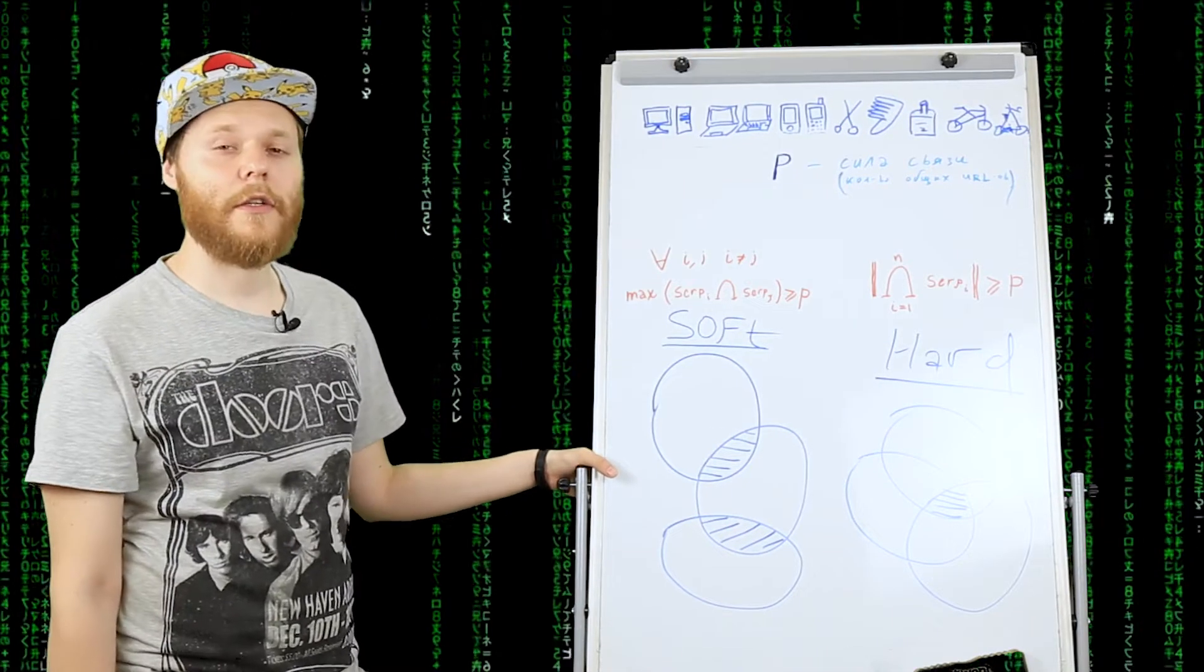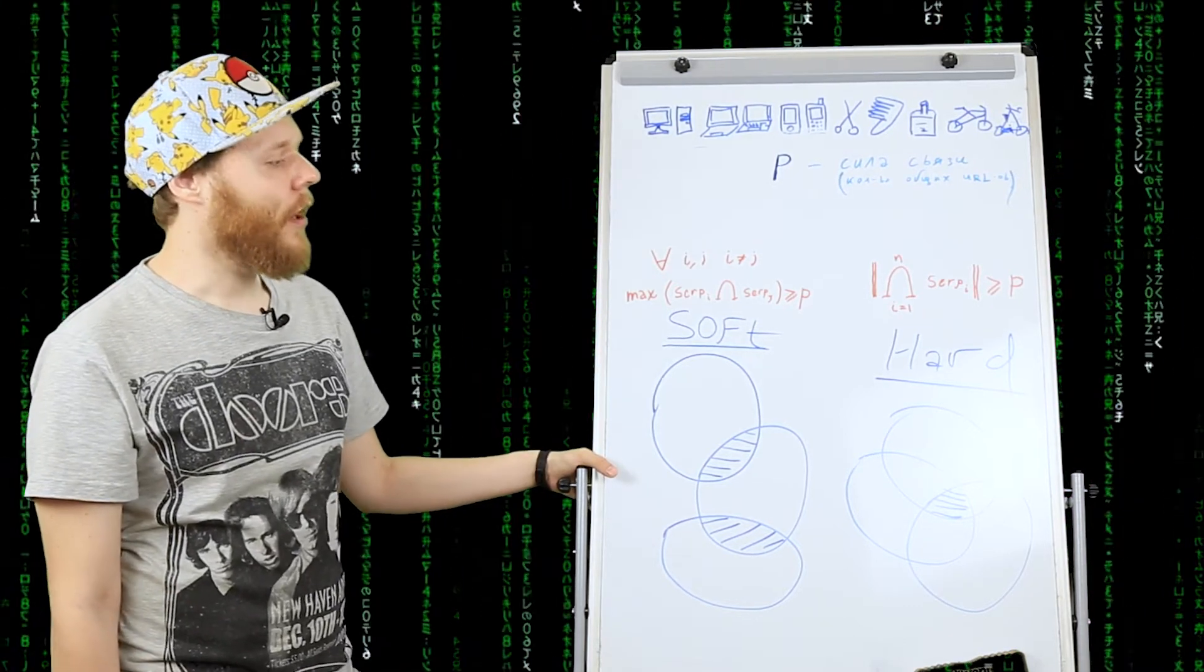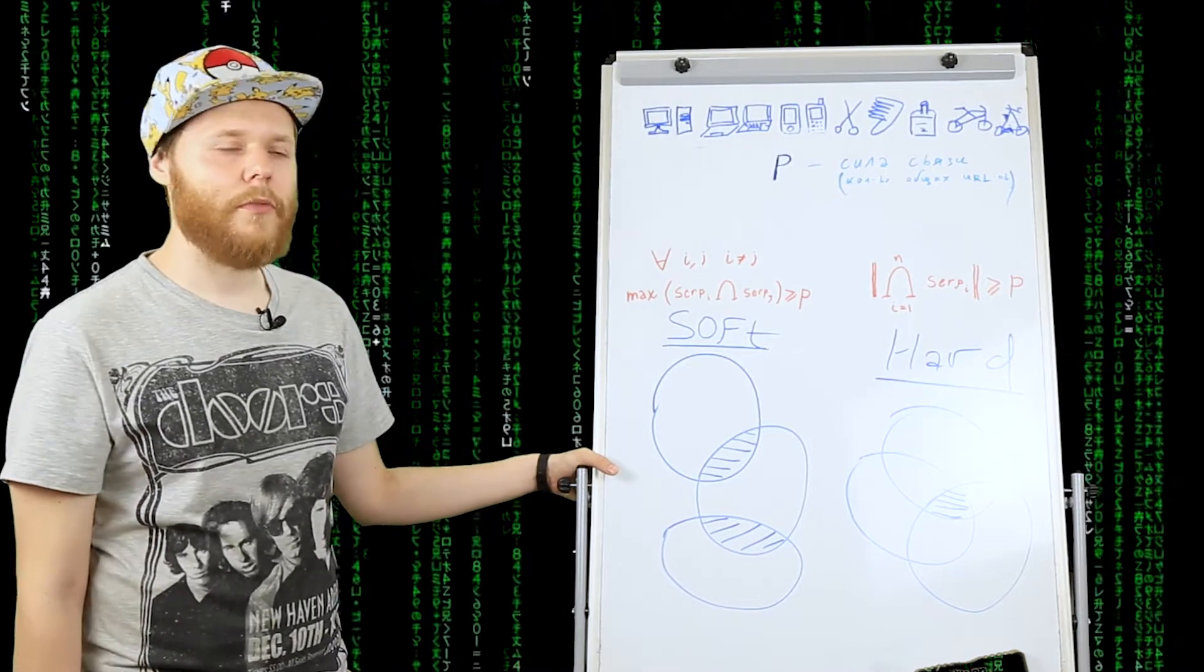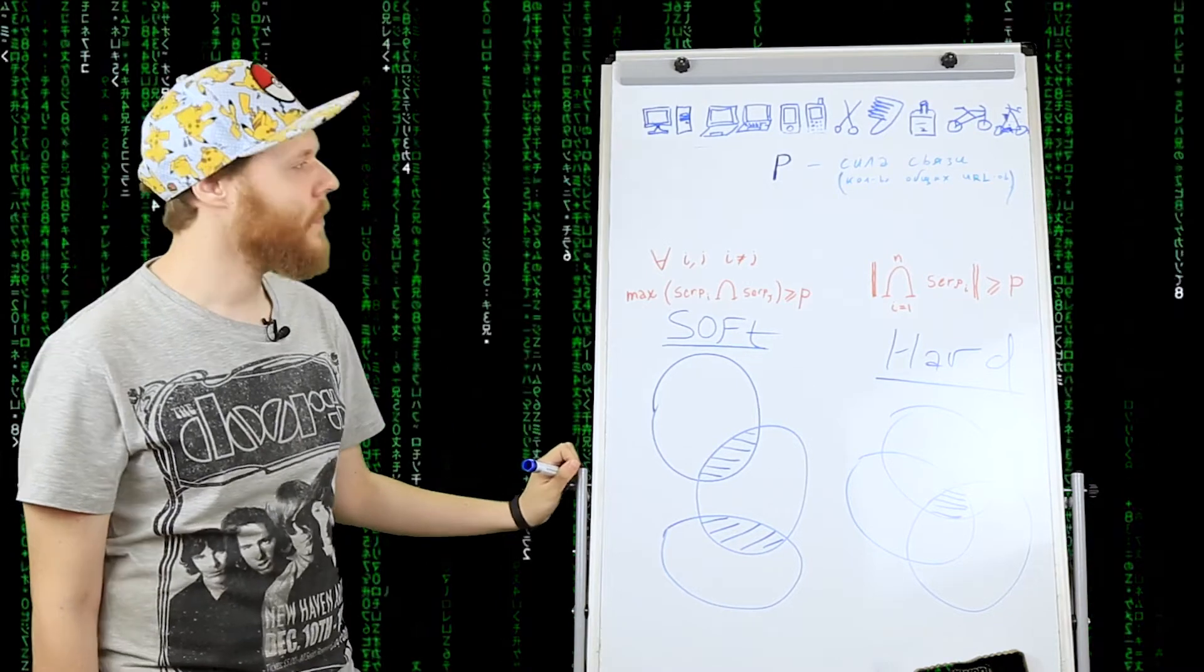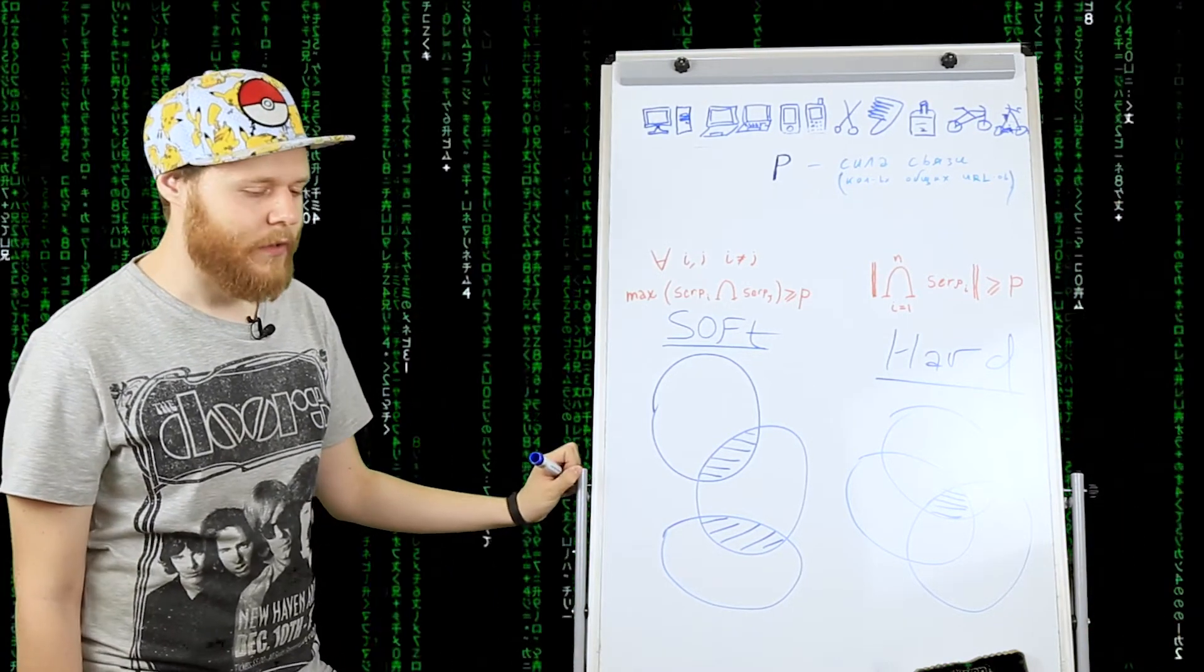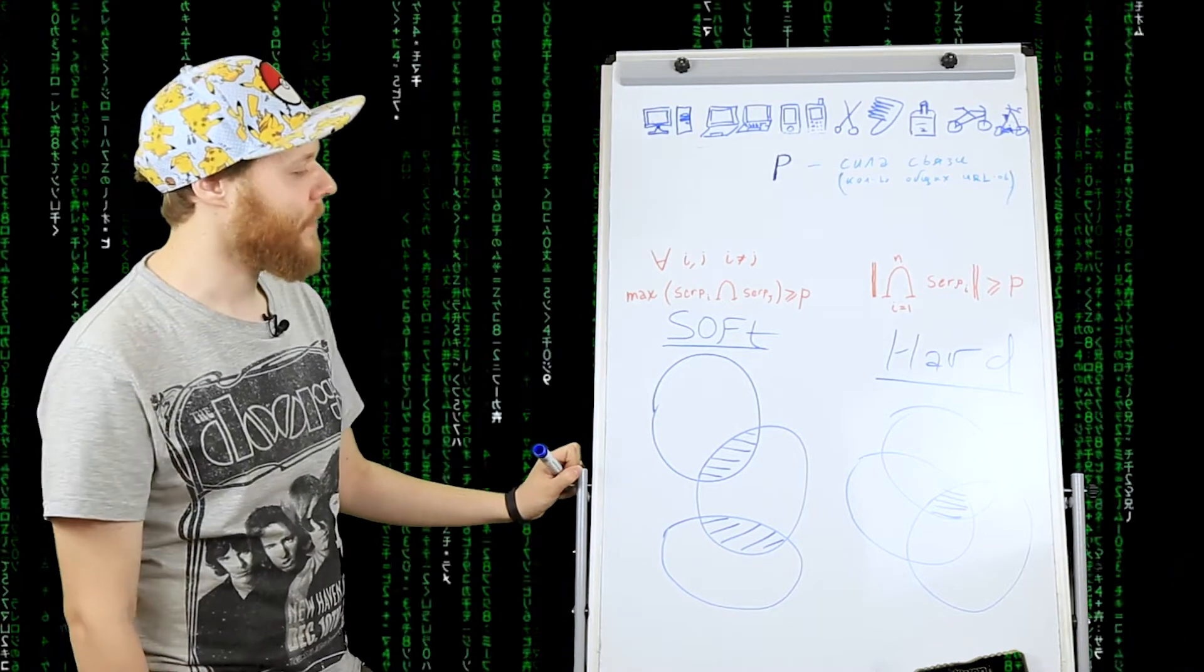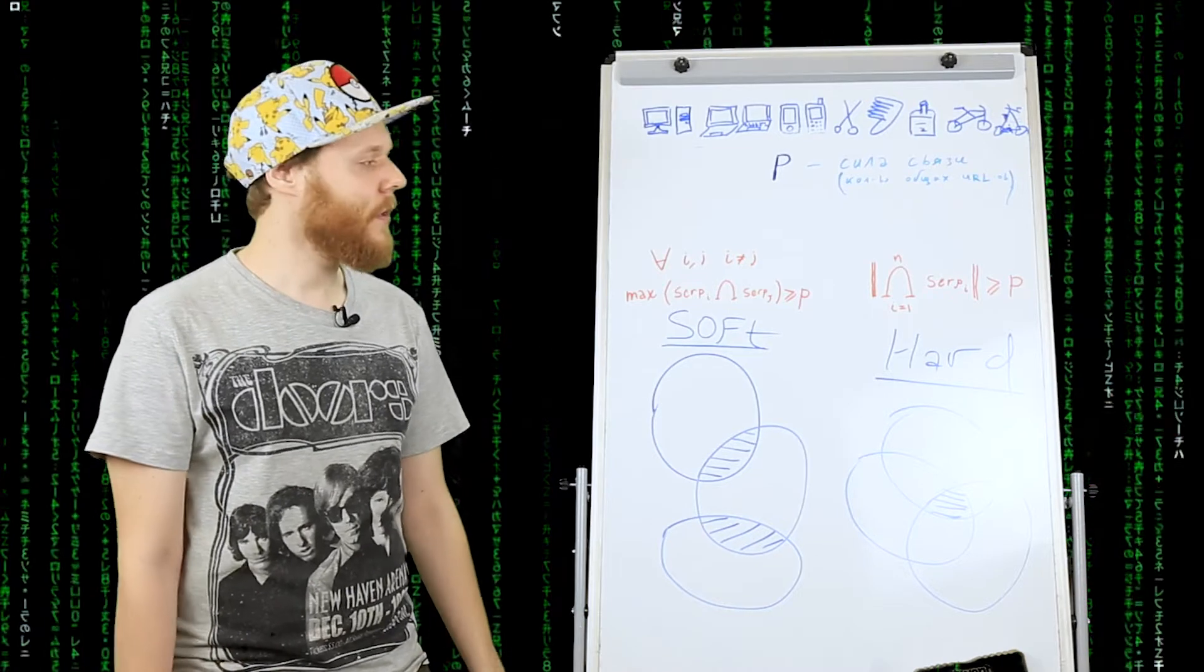После того, как мы провели диагонализацию матрицы смежности методом Яна Чекановского, мы должны разбить ключи на кластера. Для этого пользователю предлагается выбрать силу связи и метод кластеризации Hard или Soft. Сила связи показывает, сколько общих урлов должны быть у пары ключевиков в одном кластере, а Hard или Soft то, как именно будут сливаться кластера.